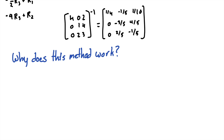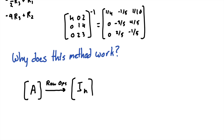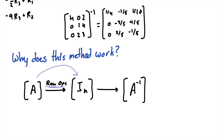So why does this method work? To understand it, we have to understand what an inverse is. If we have matrix A and it's invertible, that means there are row operations we can apply to A that will eventually get it into the identity matrix, which we denote as I_N. To find the inverse of A, we apply those same row operations that took us from matrix A to the identity matrix onto the identity matrix itself. The row operations used to get matrix A to the identity matrix form the inverse matrix of A.